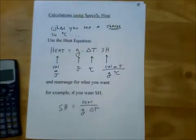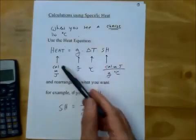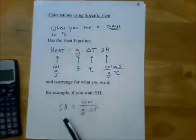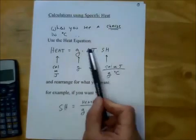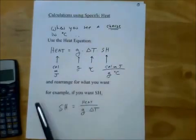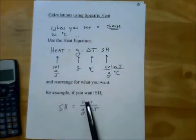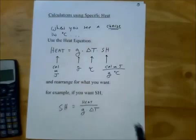If you want to know the specific heat of something, you rearrange this equation, and you'll get specific heat comes over, and you get heat over grams delta T.